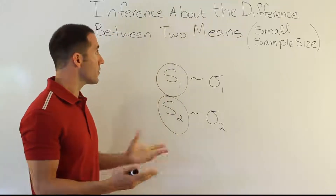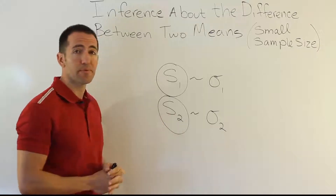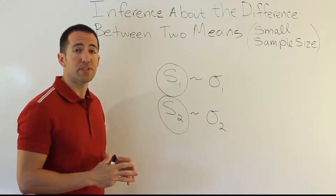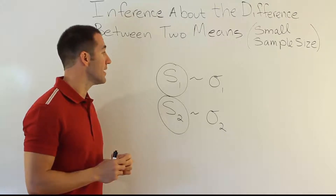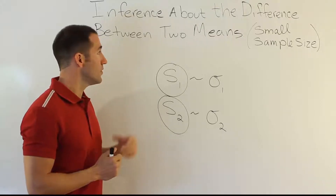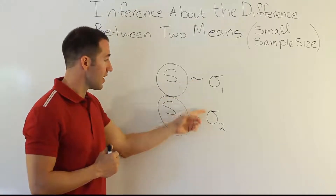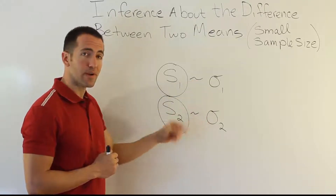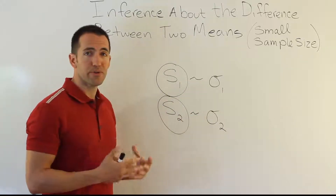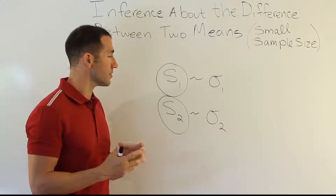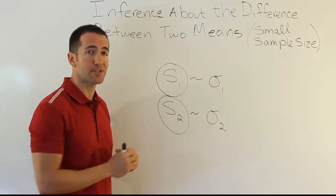However, if that was all there was to it, we'd just move on — mechanically there wouldn't be much difference. It turns out there's another issue: if we're going to use the t-distribution approach, we have to be concerned with whether the population standard deviations are, in fact, equal or whether they are different. If they are different, the distribution of our point estimator will not be exactly a t-distribution, which means we'll have to approximate its distribution.